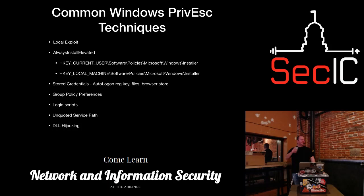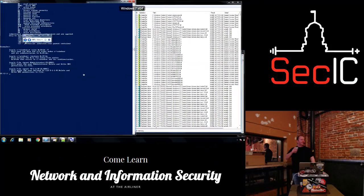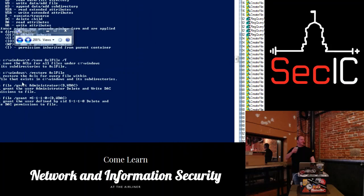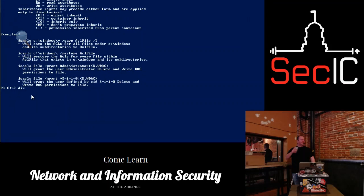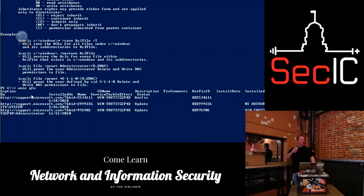First one: local exploits. When you get a shell on a box, one of the first things I like to do is dump all the hotfixes so you can figure out what's installed, and then you can search Exploit-DB for what's not there. There's a WMIC command for it. So magically, if this command works, it should dump out the list of hotfixes that are installed. This is a Windows 7 system. You can use your knowledge - like, hotfix 1, 2, 3 isn't installed, I got an exploit for that. That's one easy way to do it.